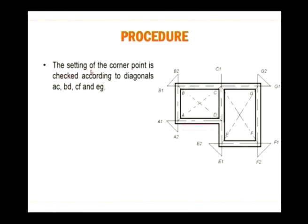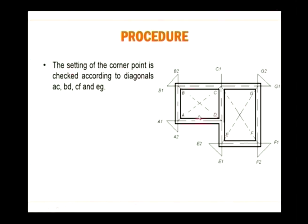In Step 2, the setting of corner points is checked according to diagonals A-C, B-D, C-F and E-G. To confirm the marked drawing is actually perpendicular, the distances between diagonal points are measured and cross-checked with the original drawing. This confirms that the plan is exactly replicated from the drawing to the ground.